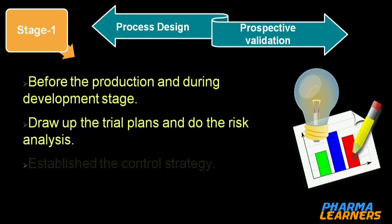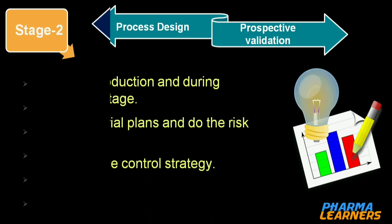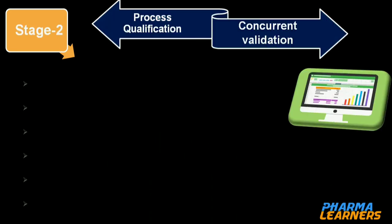We analyze process variables and CQAs to perform risk analysis and establish the control strategy. That's why it is called prospective validation. Both stage 1 — process design — and prospective validation are very similar in terms of the work we perform.